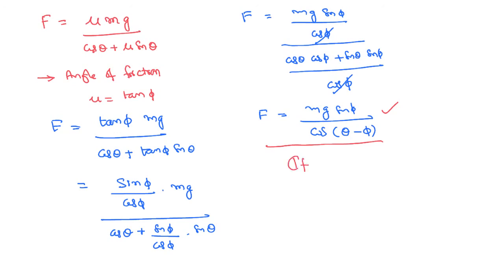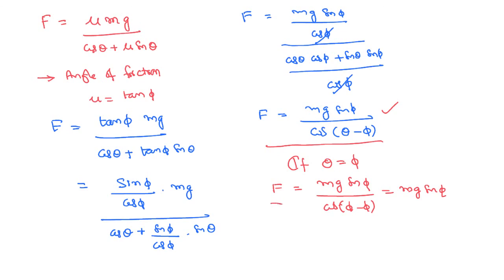Suppose you pull with an angle theta equal to the angle of friction phi. Then F equals Mg sin phi divided by cos(phi minus phi), which becomes cos 0 equals 1. Therefore the force becomes its least required value, Mg sin phi. So to pull a body with the minimum possible force, you need a minimum value of Mg sin phi, where theta must equal phi, the angle of friction.